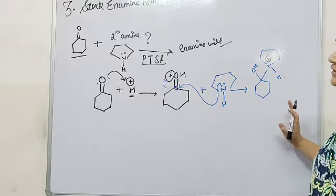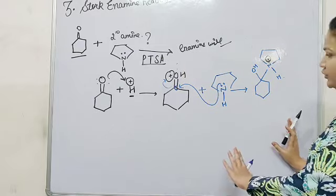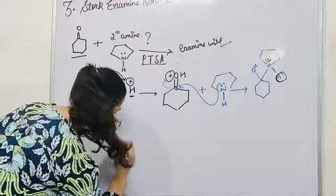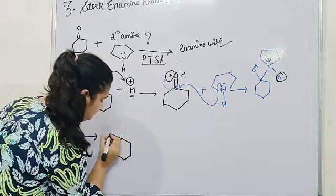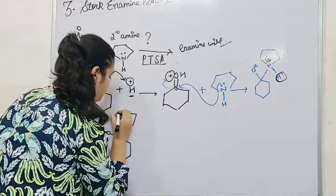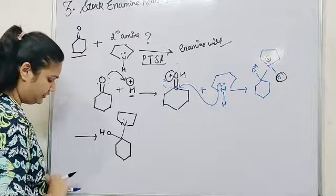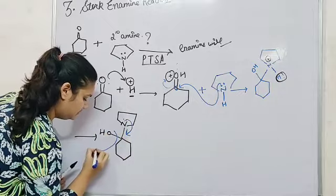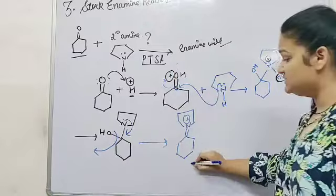We also know that the PTSA is present as a conjugate base because it has already donated its proton. Therefore, it will extract the proton which is present here. Now nitrogen also has its lone pair; therefore, an attack will happen. This lone pair will attack here and the OH will be removed. Therefore, this species is formed.